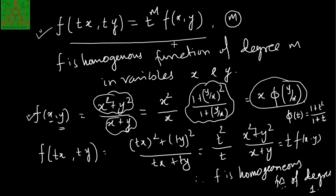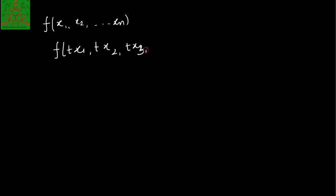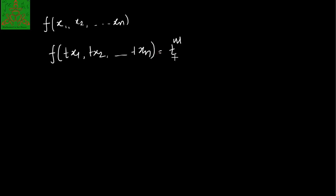As we have defined homogeneous functions of degree m in two variables, we can define homogeneous functions in n variables also. So let's say f(x₁, x₂, ..., xₙ) is an n-variable real-valued function. If it satisfies the condition f(tx₁, tx₂, ..., txₙ) = tᵐ·f(x₁, x₂, ..., xₙ), then we can say that f is a homogeneous function of degree m in variables x₁, x₂, ..., xₙ.